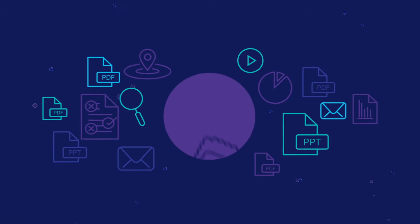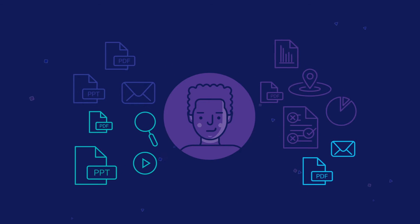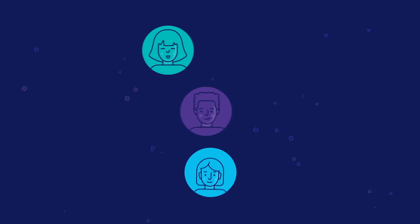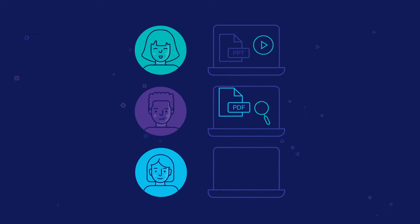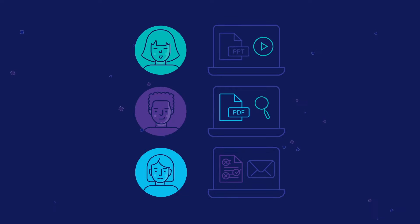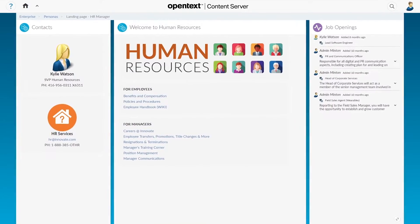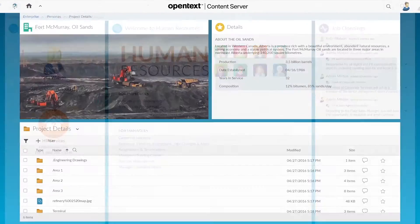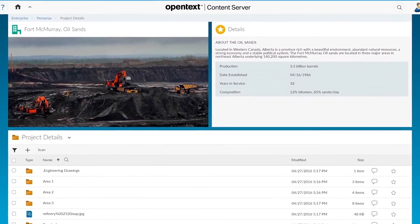People want to see information they need, organized in a way that helps them get their job done. But different departments and functions manage and interact with information from different perspectives. People need customized views depending on their role. With OpenTech's Content Suite, your IT department can address these issues easily by creating information views specific to activities and roles within the organization.